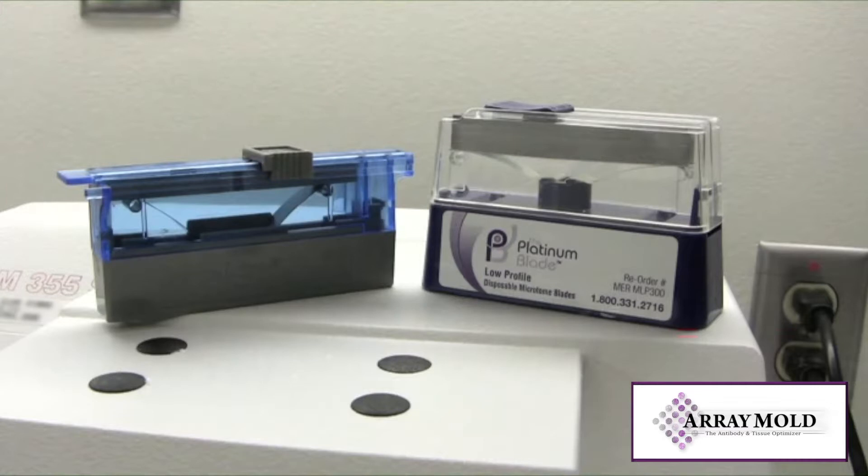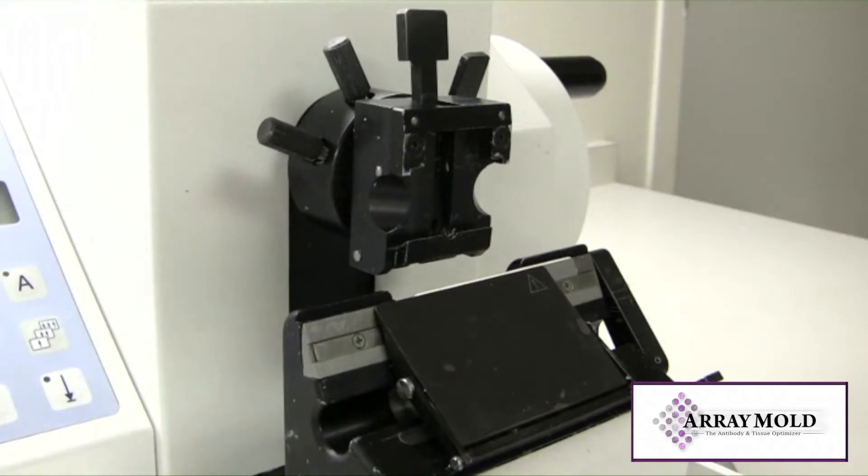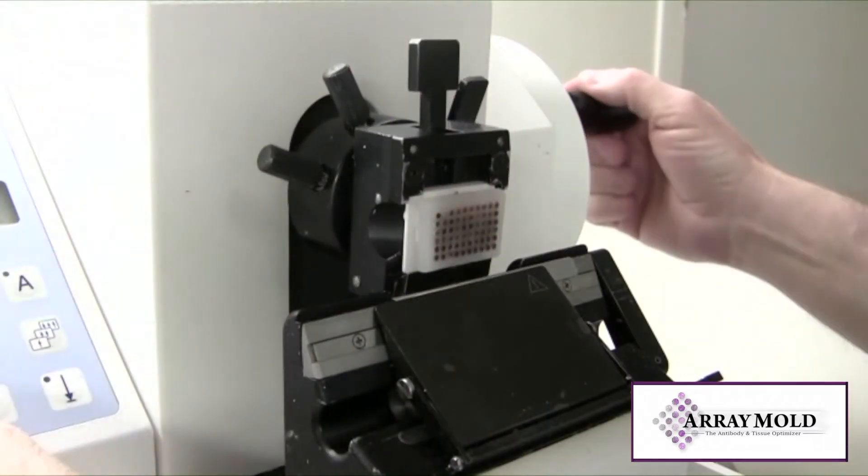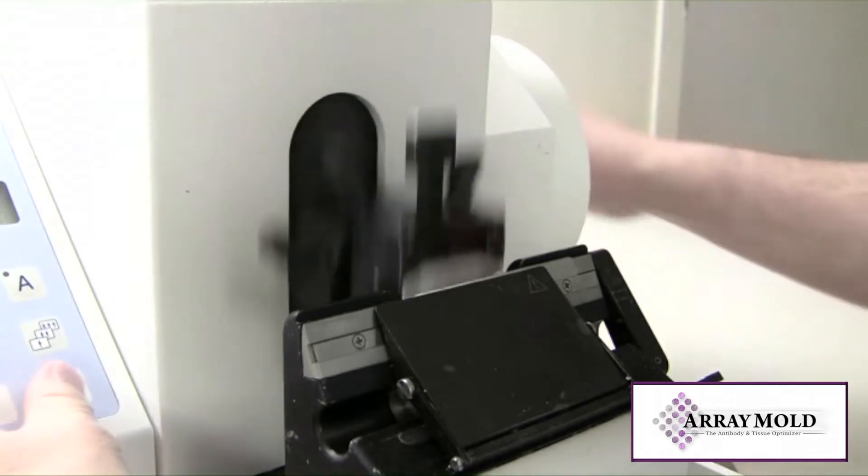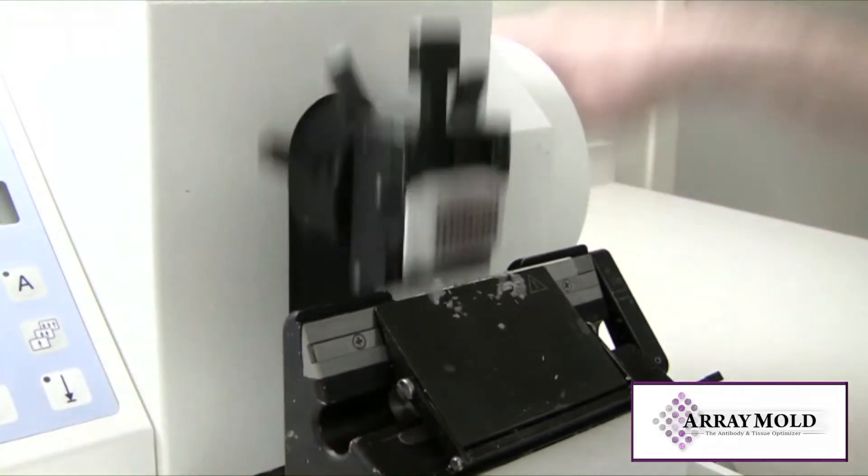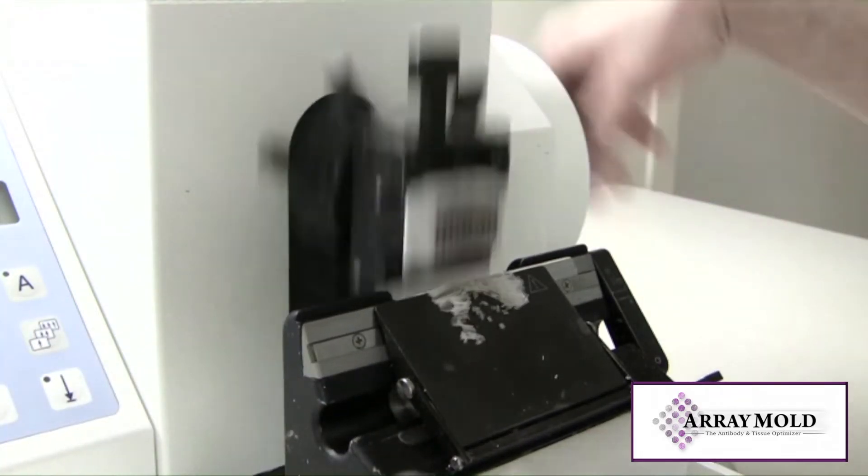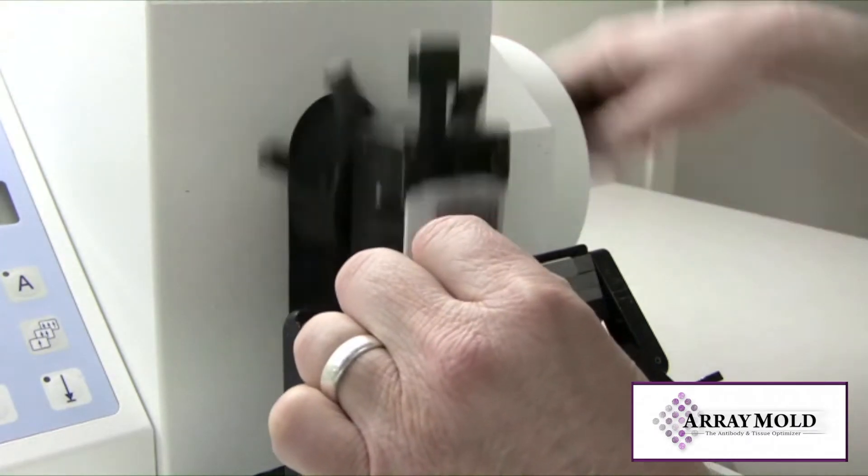I'm not going to cover cutting procedures because there are as many techniques as there are histologists. First trim into your array block so the surface is flat. If your microtome chuck is at a different angle than your array block, you may want to adjust the chuck so it's flat against the block. You don't want to cut away valuable tissues facing into your array block.